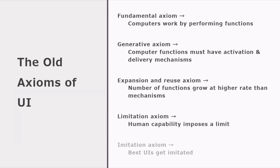Then we have the limitation axiom. This refers to human capability that actually imposes a limit in the number of controls and the number of elements of a user interface. And no matter how you accommodate or reuse or reorganize the different elements of the user interface, you will always be limited by the human capability to understand those functions and to utilize those functions. And beyond that, functions in the computer or elements in the user interface will simply become invisible to the user.